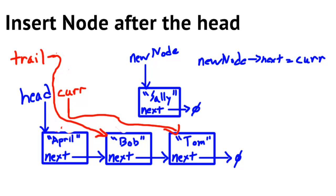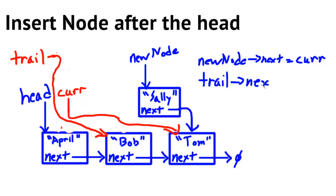Now we update trail's next pointer so that it points to what new node is pointing to. We update that pointer, and trail's next is now pointing to our new node. We now have a linked list where we've inserted Sally at the correct location.